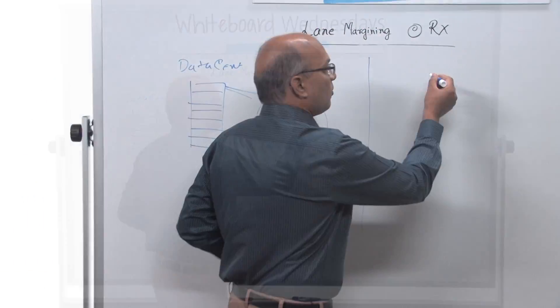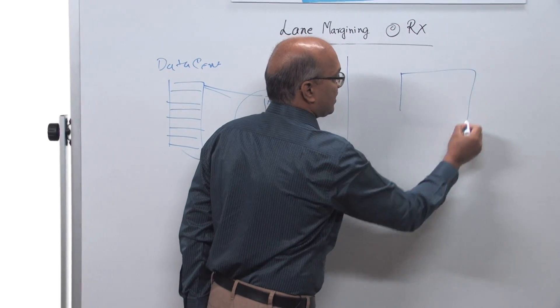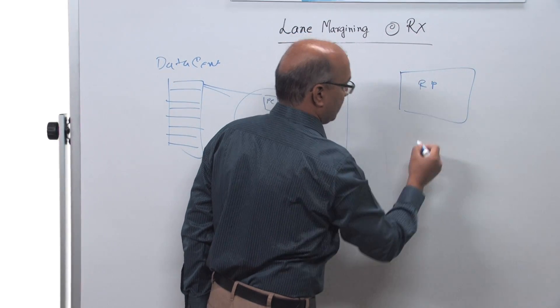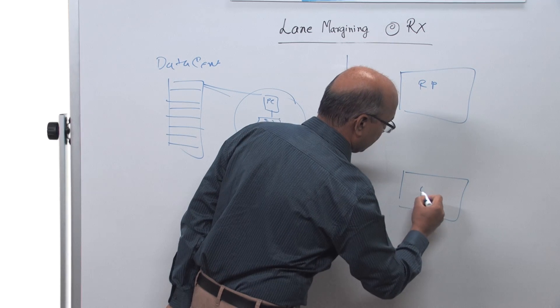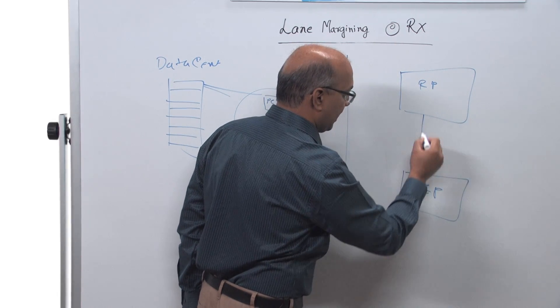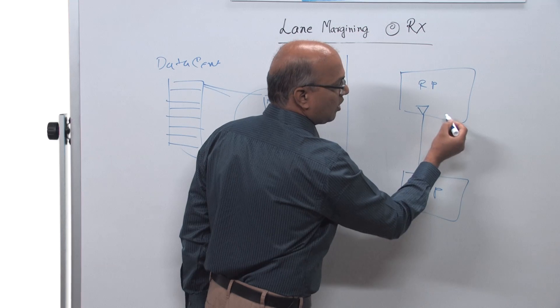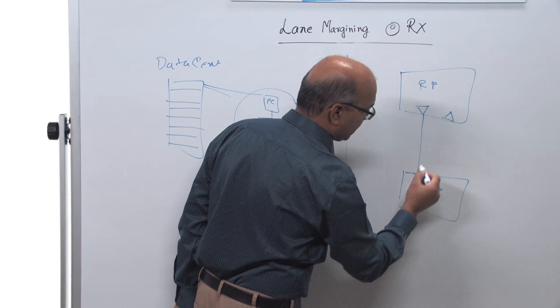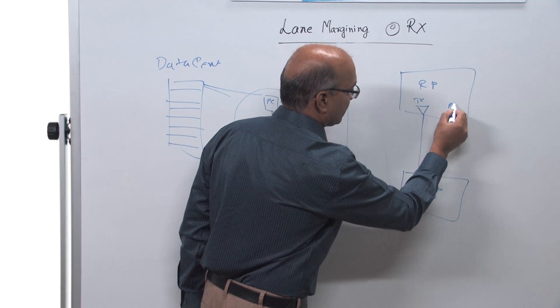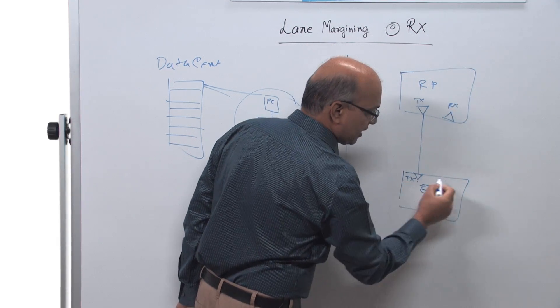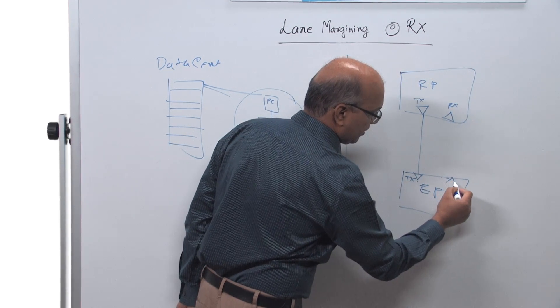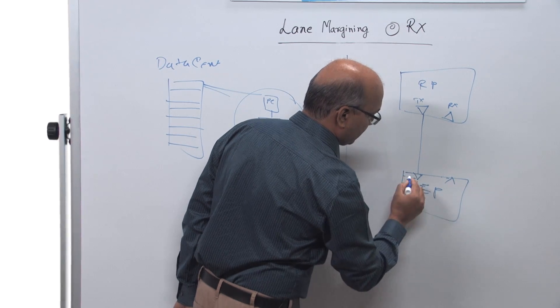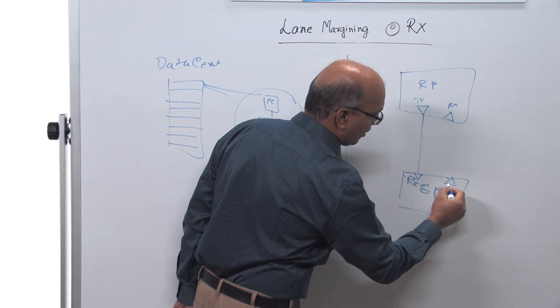The way that is done is, let's say this is a root port, and you have an endpoint here. This is a link. There is a transmitter on one end and the receiver on the other end. Similarly, there is a receiver here, a transmitter, a receiver here, and a transmitter on this end.